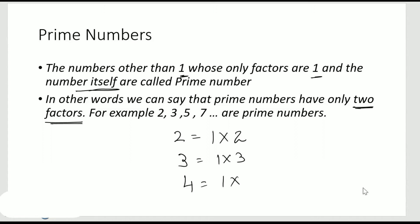What about 4? 1 times 4 is 4, and also I can write it as 2 times 2. So I have got 1, 2, and 4 — three factors. So that means 4 is not a prime number.